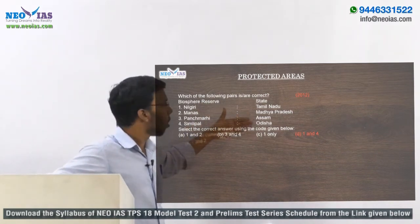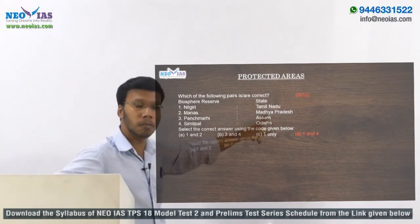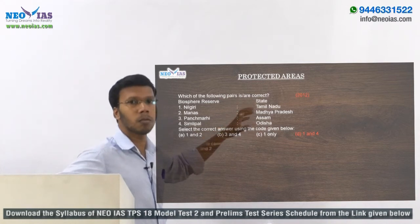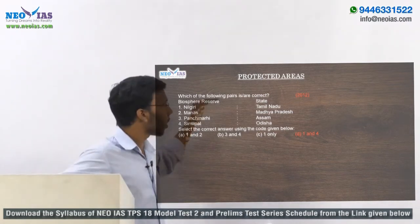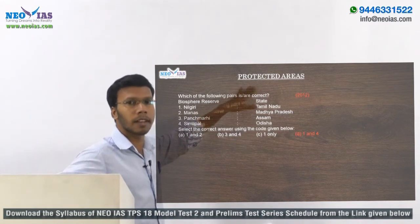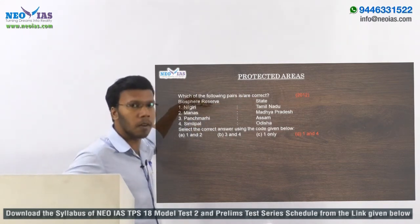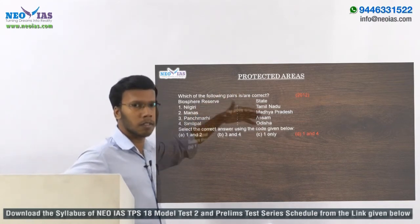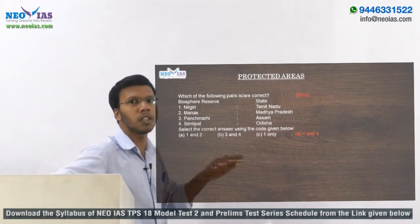Another question type gives river systems or mountain systems instead of states for matching with protected areas. When studying protected areas, you must also be thorough with river systems and geography. Conceptual questions are also asked — such as what is a Biosphere Reserve, who declares it, what are its functions, what is a National Park, who declares it, and which law protects it. For example, National Parks are declared under the provisions of the Wildlife Protection Act.